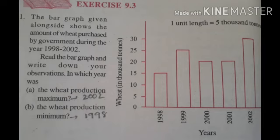Page number 198. Dear students, here we have been given one bar graph. The bar graph given alongside shows the amount of wheat purchased by the government during the years 1998 to 2002. Read the bar graph and write down your observations. Here we have been given the bar graph and we have to read it.